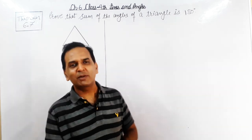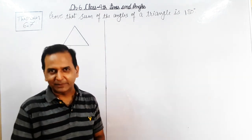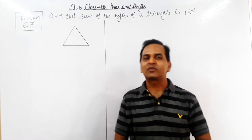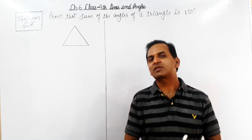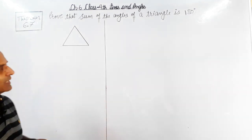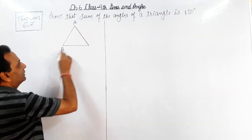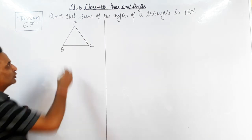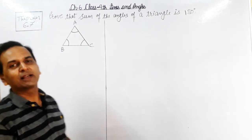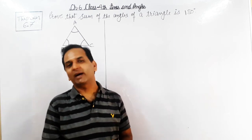Now today's theorem — what is the statement? Let us understand and then proceed to the solution. Prove that the sum of the angles of a triangle is 180 degrees. हमें यह प्रूव करना है कि किसी भी triangle के सभी तीनों angles का sum 180 degree होता है। The given triangle is ABC, and we have to show angle A plus angle B plus angle C equals 180 degrees.